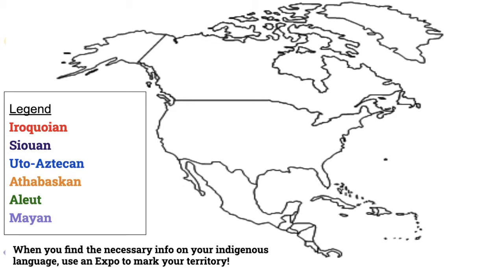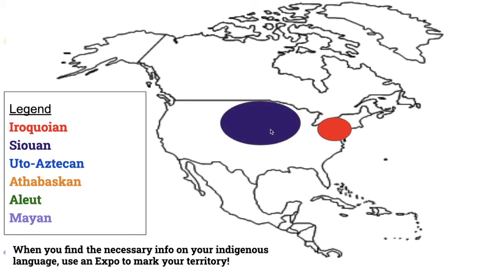Iroquoian languages are mostly in the northeast part of the United States — in general, northeast North America, more along the northeastern coast of the United States, but not all the way up into the northeastern parts of Canada. Siouan languages are really dominant in the Midwest and up into the Great Plains area, including the Great Lakes region — which is where we are here in Crown Point, Indiana, at the bottom of Lake Michigan.